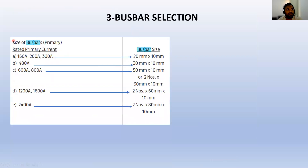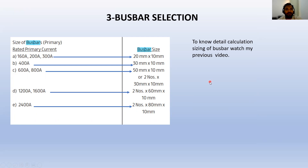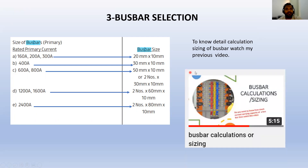For bus bar selection, the standard sizes are: 160–200A = 20mm × 10mm, 400A = 30mm × 10mm, 600–800A = 15mm × 10mm or two 30mm × 10mm bars, 1200–1600A = two 80mm × 10mm bars. For detailed bus bar calculations and sizing, refer to the dedicated bus bar calculation video.